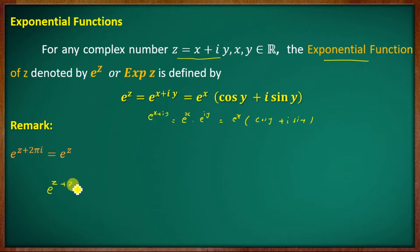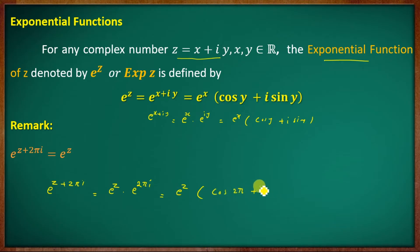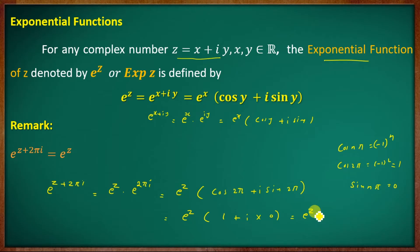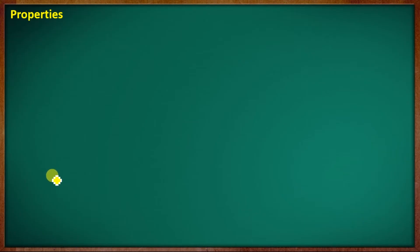E raised to z plus 2πi equals e raised to z times e raised to 2πi. Now e raised to 2πi equals cos 2π plus i sin 2π. Since cos 2π equals 1 and sin 2π equals 0, e raised to 2πi equals 1. Therefore e raised to z plus 2πi equals e raised to z into 1, which equals e raised to z. This shows the exponential function is periodic.